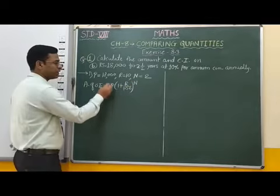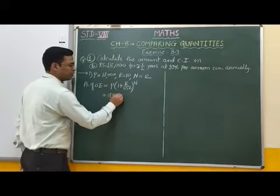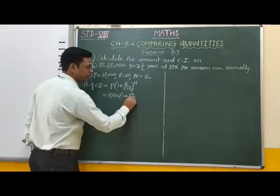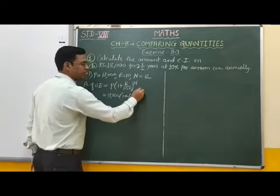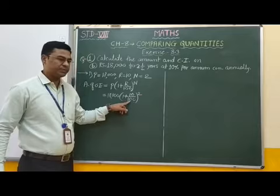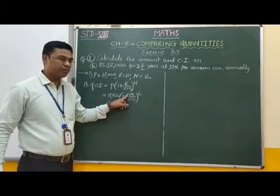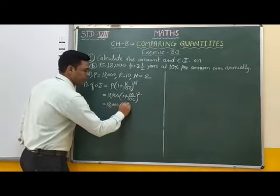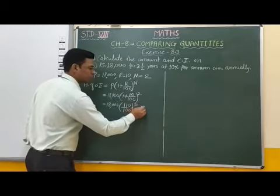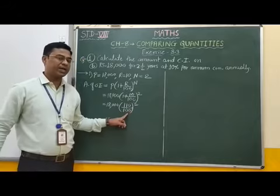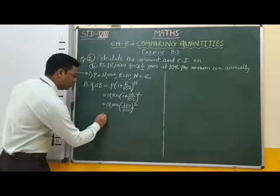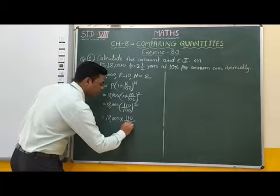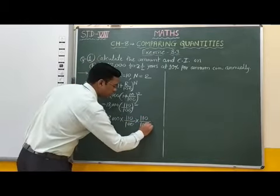Therefore, substituting values: A = 18,000 × (1 + 10/100)^2, which equals 18,000 × (110/100) × (110/100).